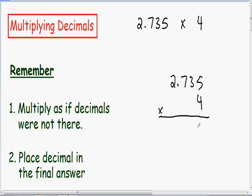So we have 4 times 5 which is just 20. Carry the 2. 4 times 3 is 12 plus 2 is 14. Carry the 1. 4 times 7 is 28 plus 1 is 29. Carry the 2. 4 times 2 is 8 plus 2 is 10.